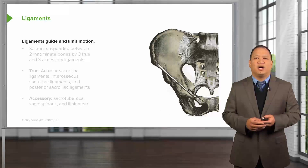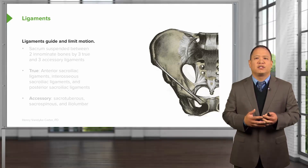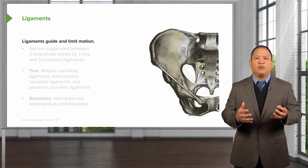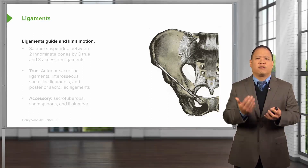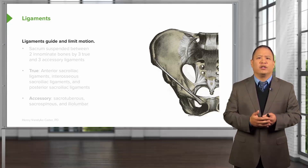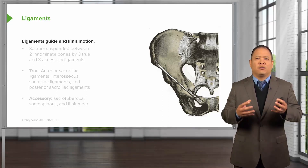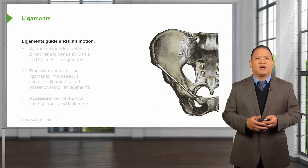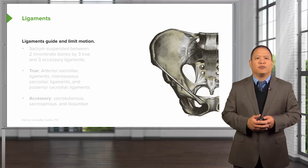There are many ligaments surrounding the sacrum and pelvis. The sacral pelvic ligaments help to form a suspensory bridge for the sacrum to be supported there. There is not a lot of muscle that keeps the sacrum in place with the innominate — in fact, it's these ligaments that help to support the sacrum.